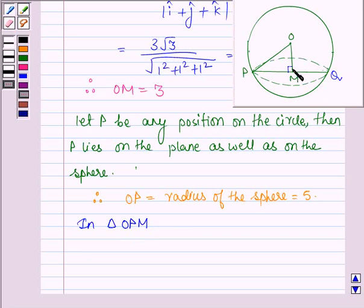So this angle is equal to 90 degrees, that is angle OMP is 90 degrees. So we have OP squared equals OM squared plus PM squared, which is by Pythagoras theorem.